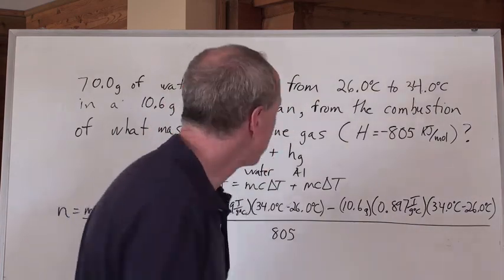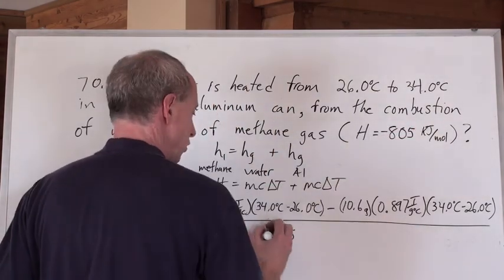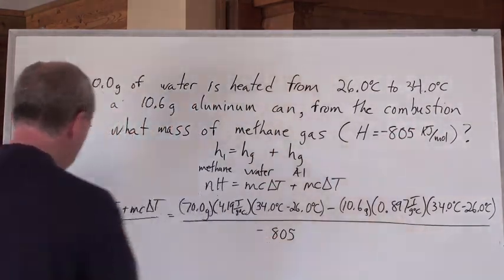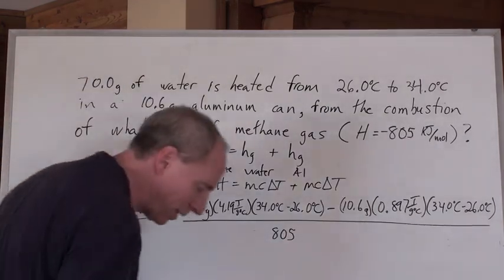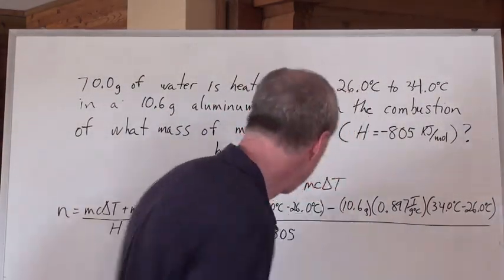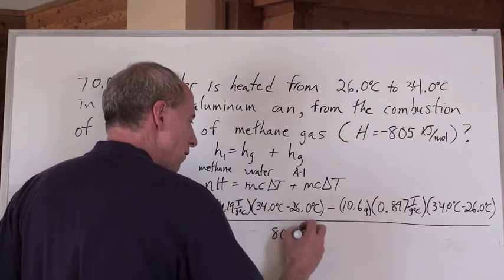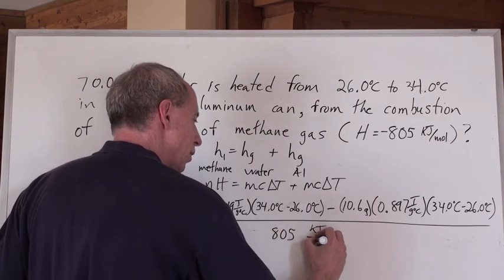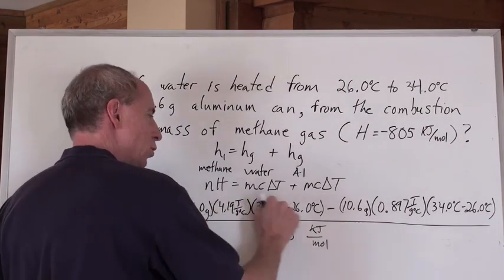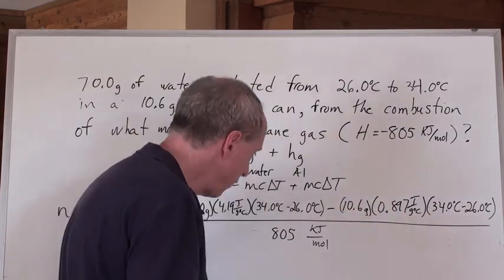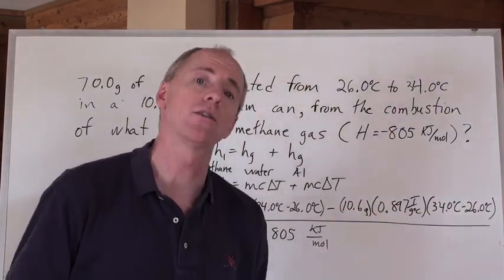But if you keep that big H as 805 kilojoules, first of all, if you keep it as a negative, you're going to end up with negative moles. So just get rid of it, because the negative just means heat is released. So get rid of it. 805 kilojoules per mole.